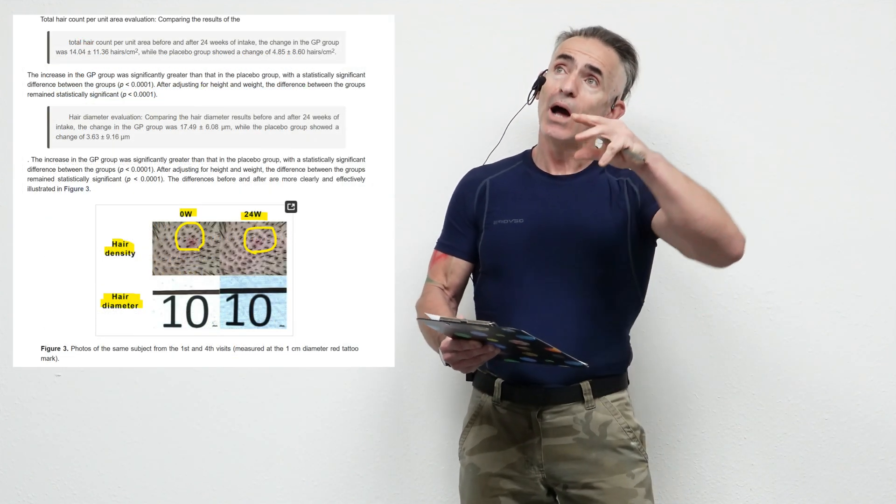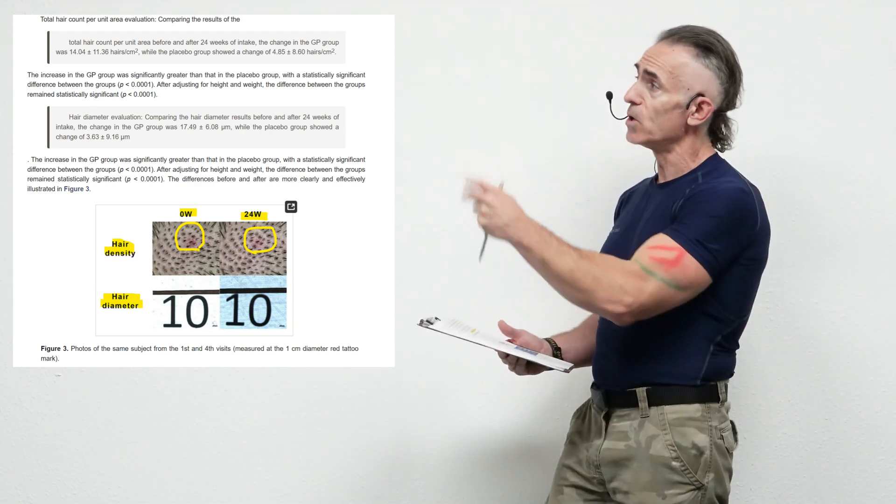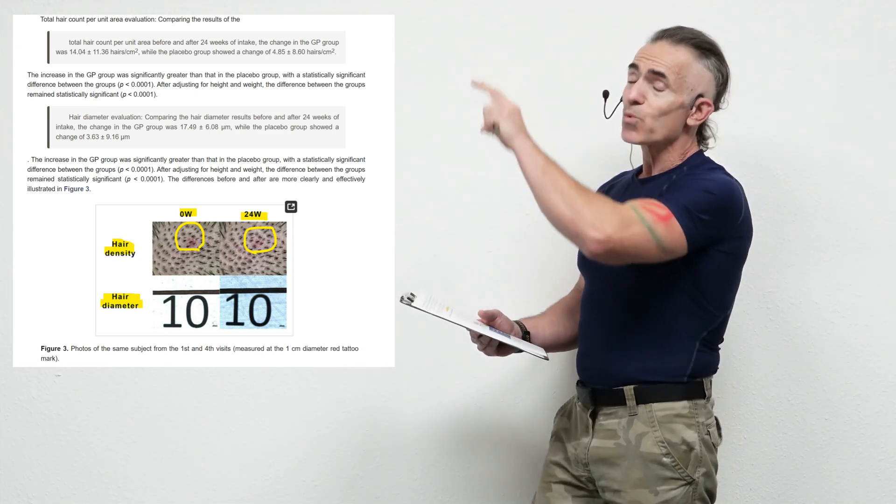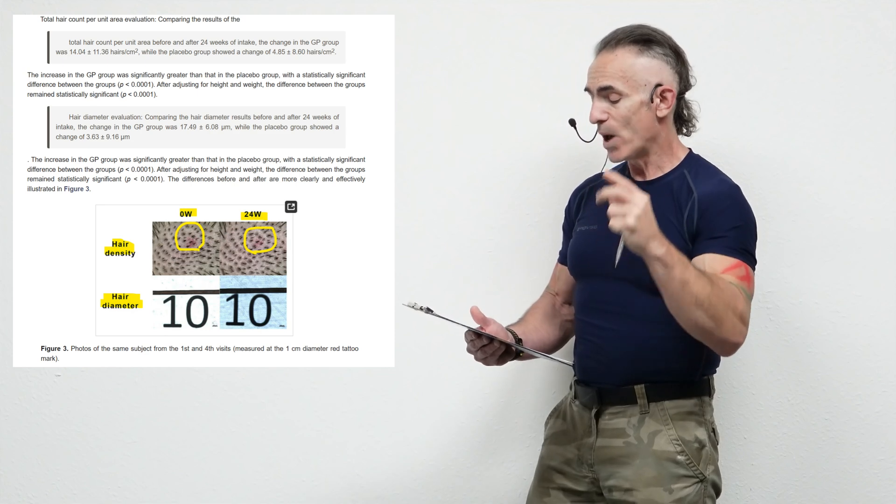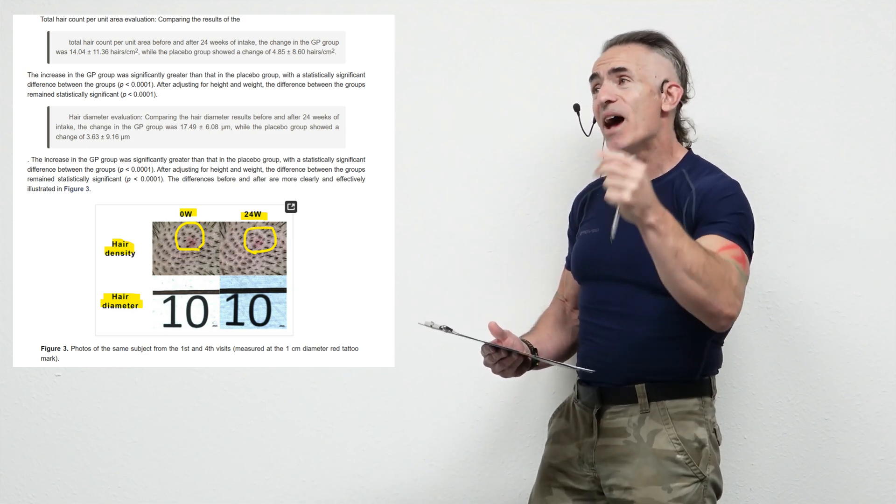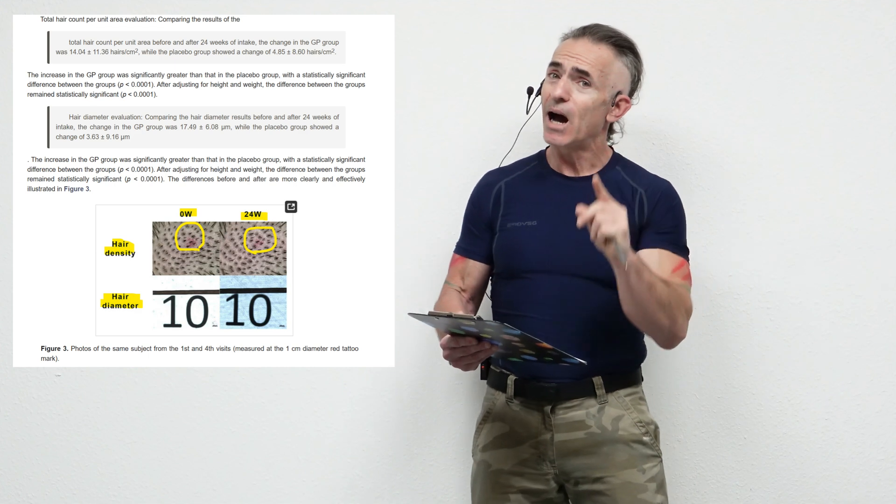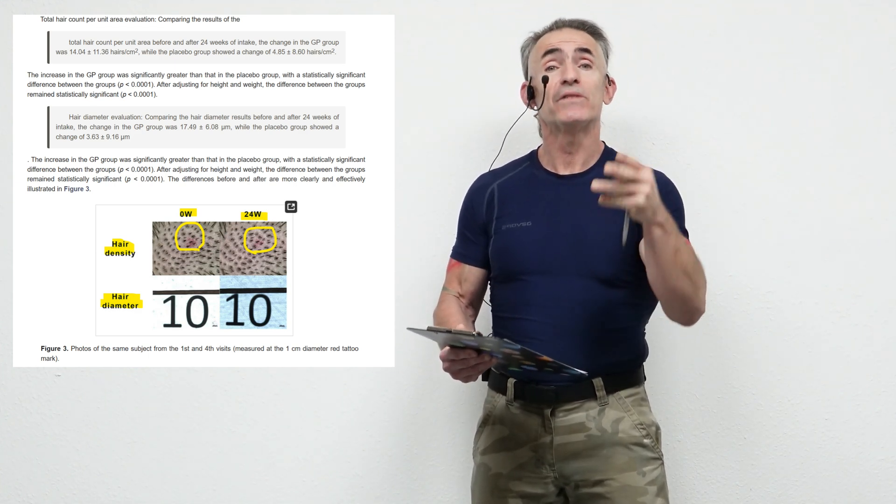Now, the outcome, how you want to see it to give a context visually is as follows. You can see right there they're looking at hair density. There's a little red spot there highlighted in yellow, so you can see that's the test area, as well as hair diameter. That's a good visual comparison to give you some context of how effective Gynostema pentaphylum was after 24 weeks of daily consumption.